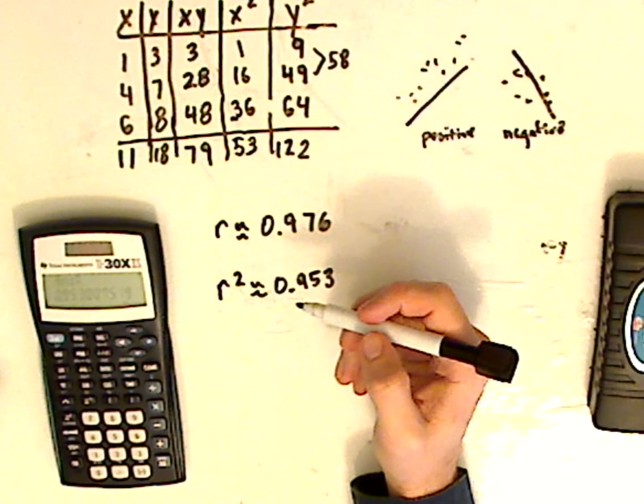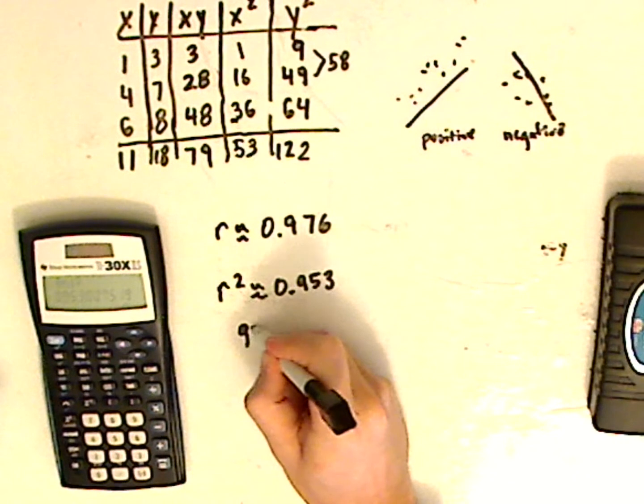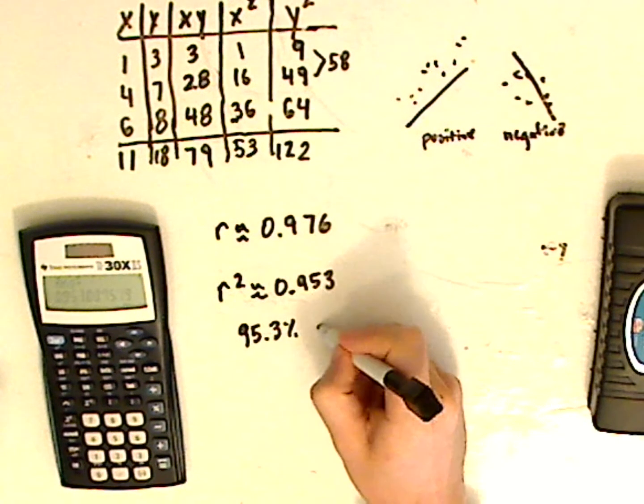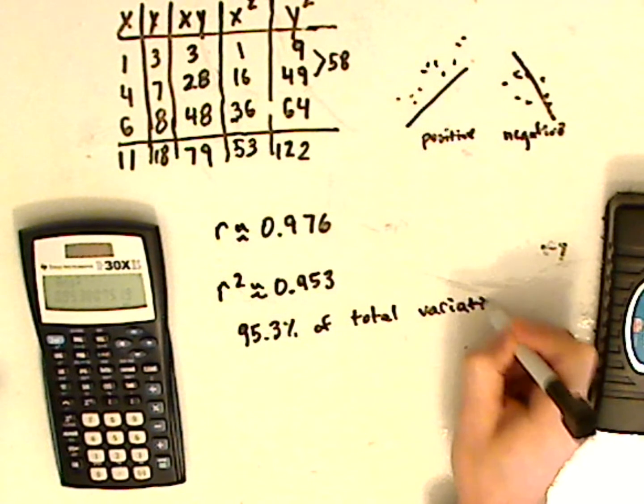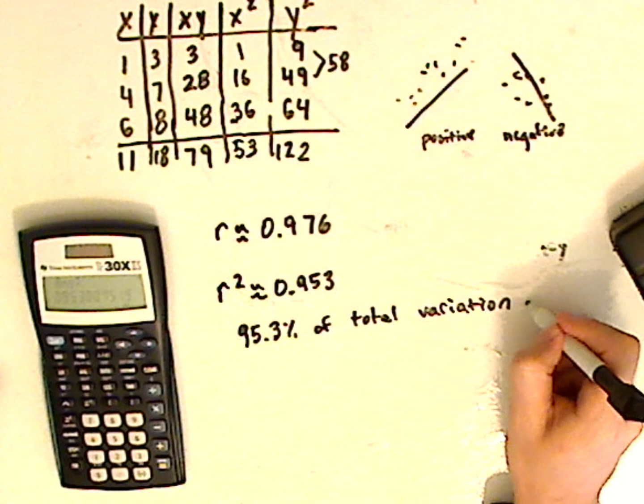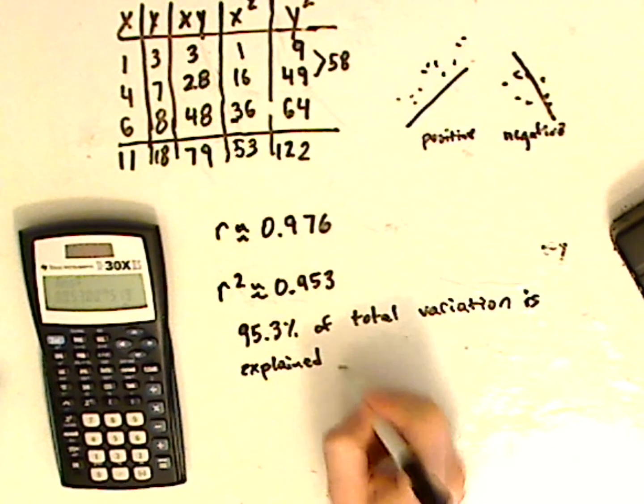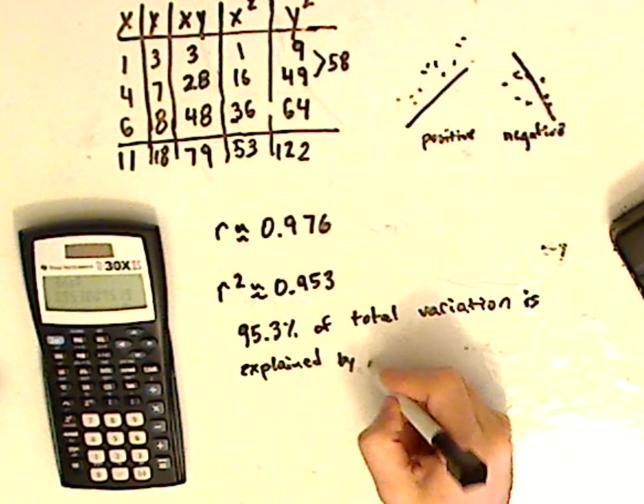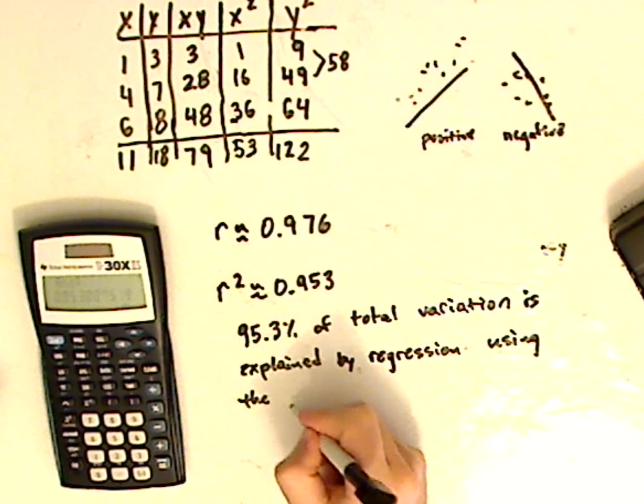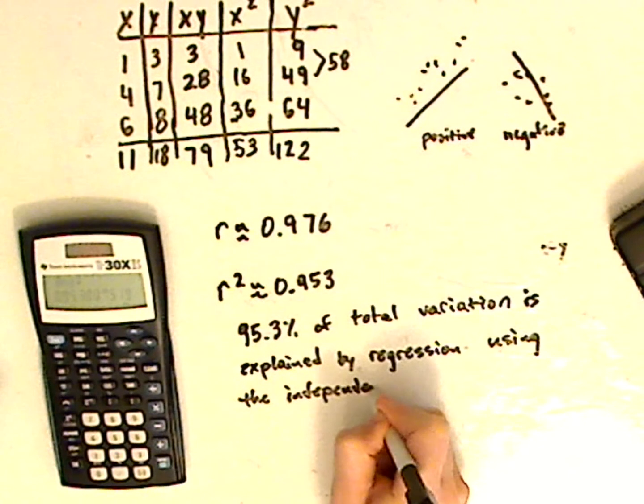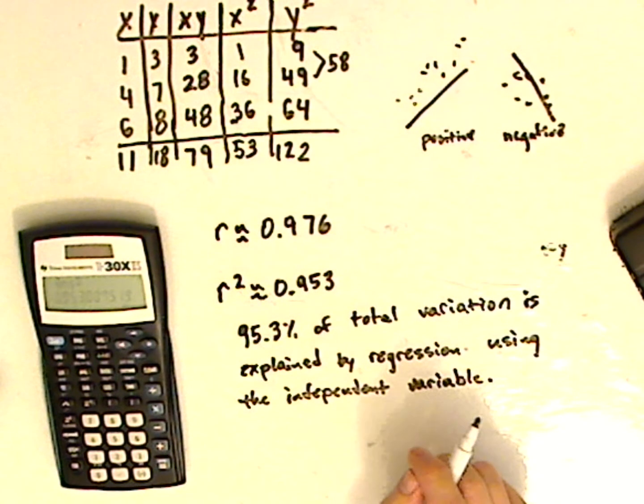Now, what does the coefficient of determination tell you? Well, it tells you about the total variation. So you have, and it's usually expressed as a percentage. So it's 95.3% of total variation. So this equation can be explained, is explained, by the regression line. So this equation is explained using the independence variable. And that's it.